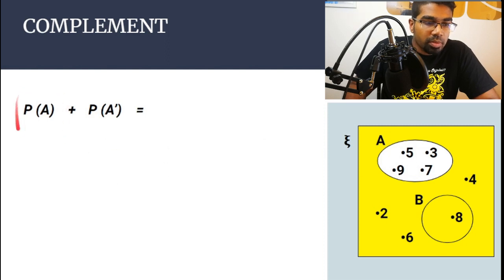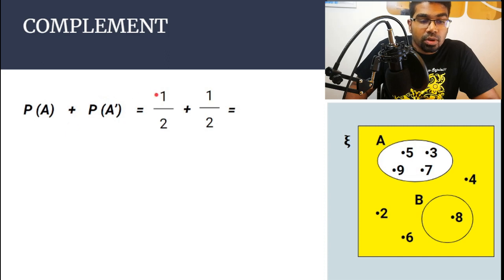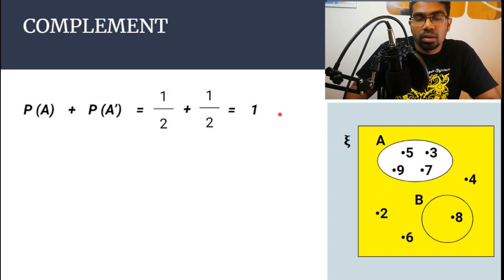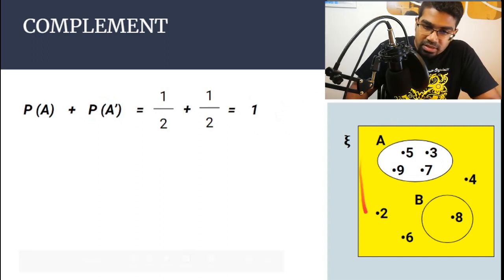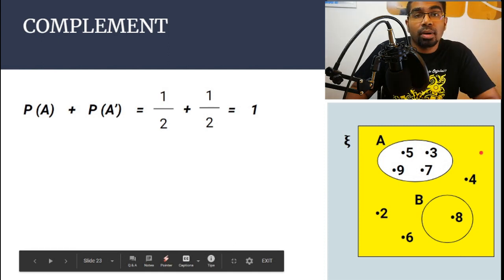Now let's look at what happens when we add the two together. When we add P(A) and P(A prime), we get one over two plus one over two, which equals one. This is an important thing to remember.